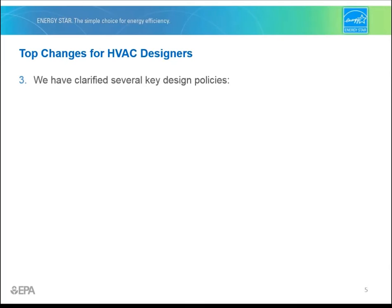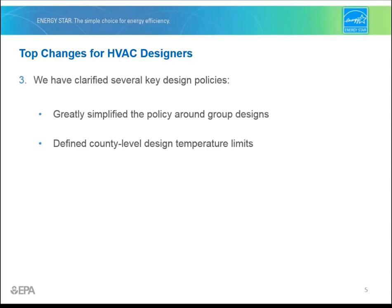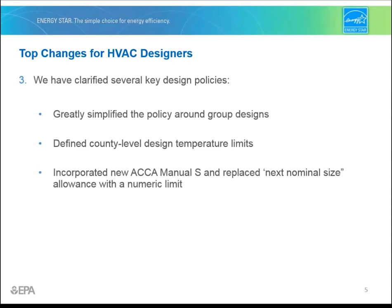And number three, we have clarified several key design policies. We greatly simplified the policy around group designs, meaning a plan that is intended to be built with potentially different elevations, options, orientations, or locations. We've defined outdoor design temperature limits for every county instead of requiring the designer to look up the closest weather station for each home. And for system sizing, we've incorporated the latest version of ACCA Manual S, removed the next nominal size allowance, and replaced it with a numeric limit. These three changes should make it easier to understand and meet our program's requirements.